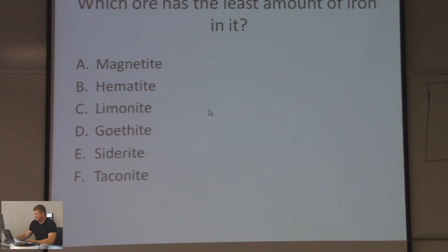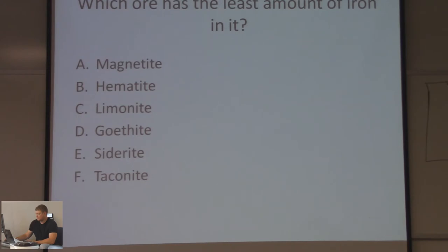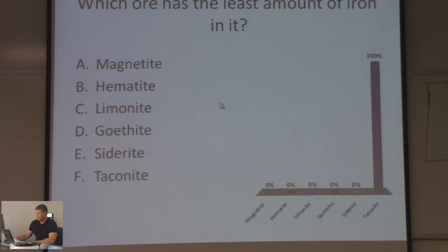Which ore has the least amount of iron in it? Magnetite, hematite, limonite, gothite, siderite, or taconite? If you picked F, you're 100% accurate — taconite. They'll call it taco night, but I guess taconite. There's a smiley face answer indicator for you.